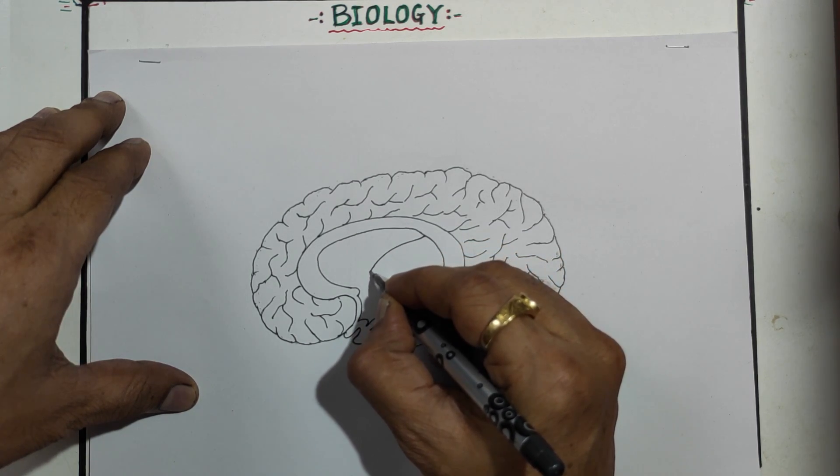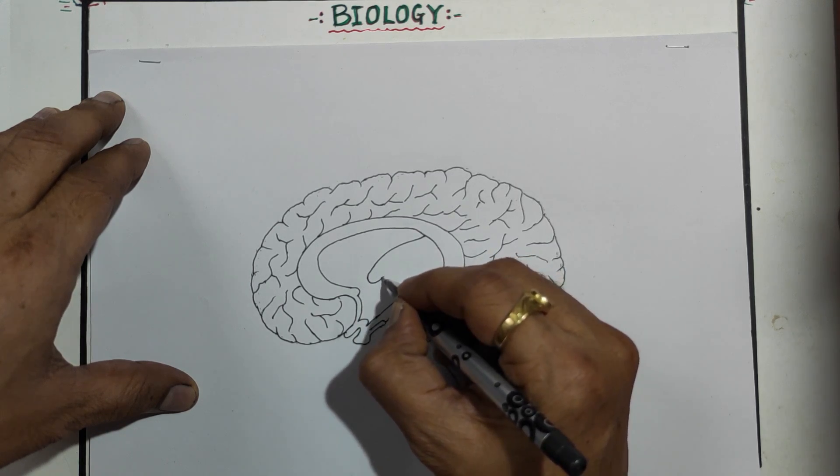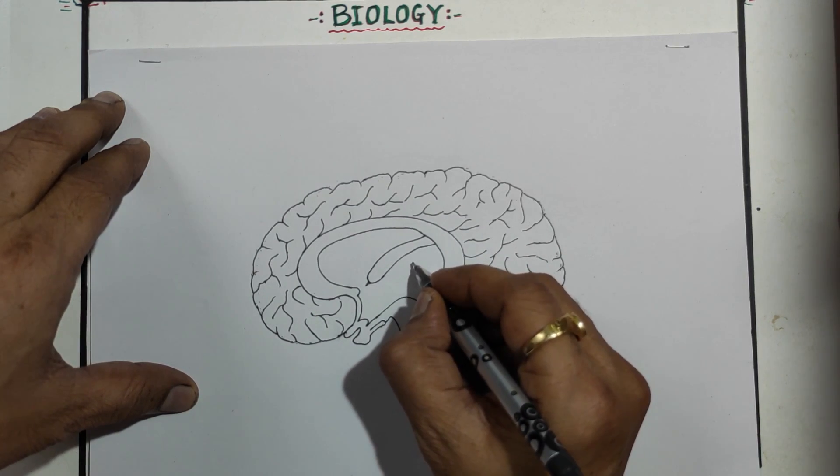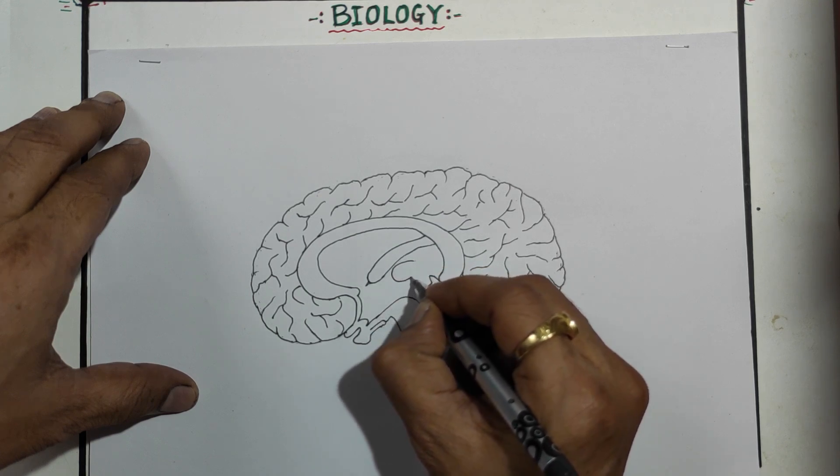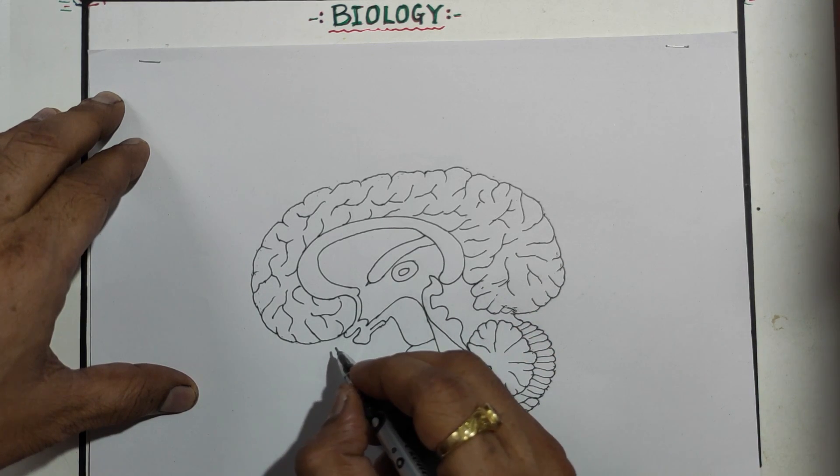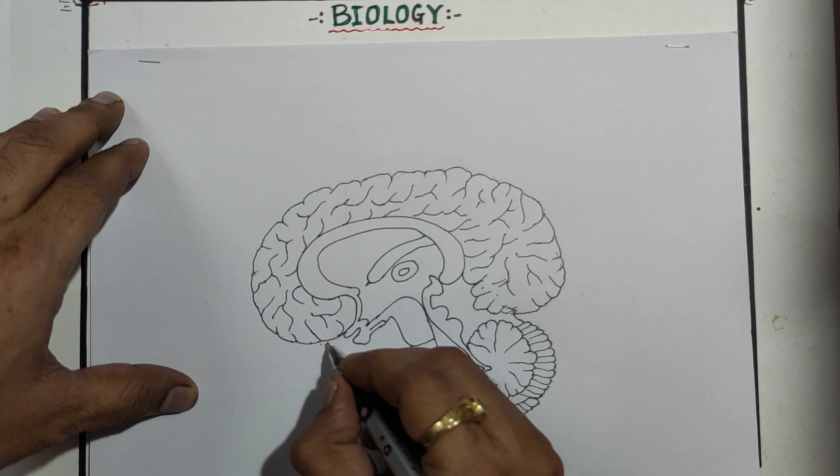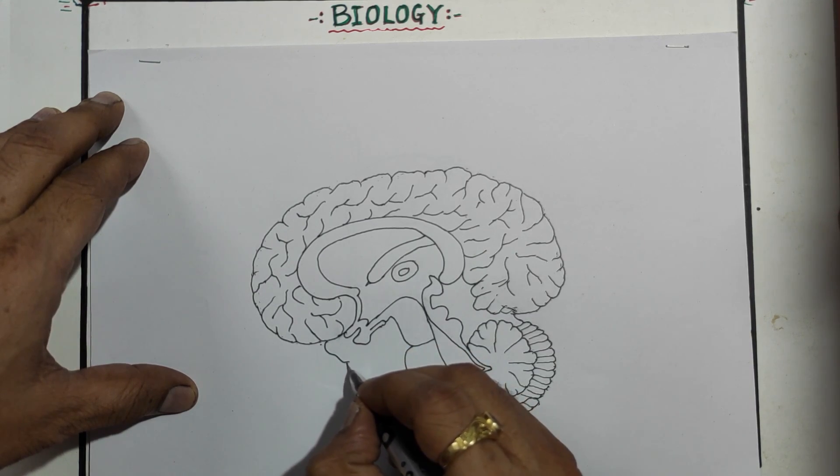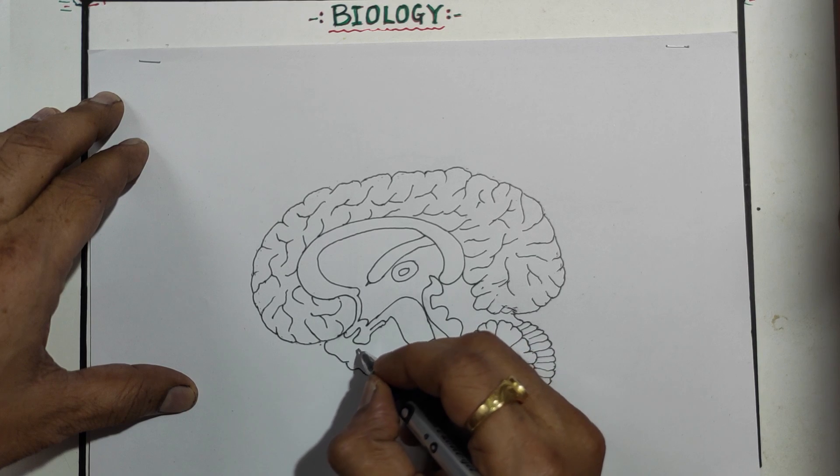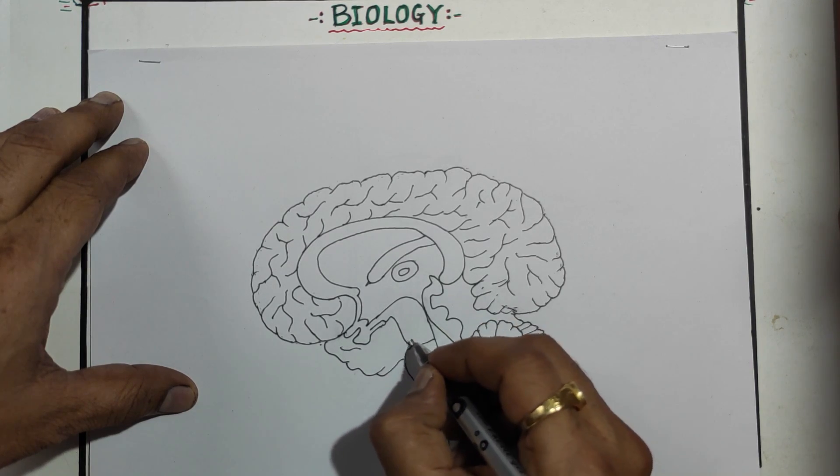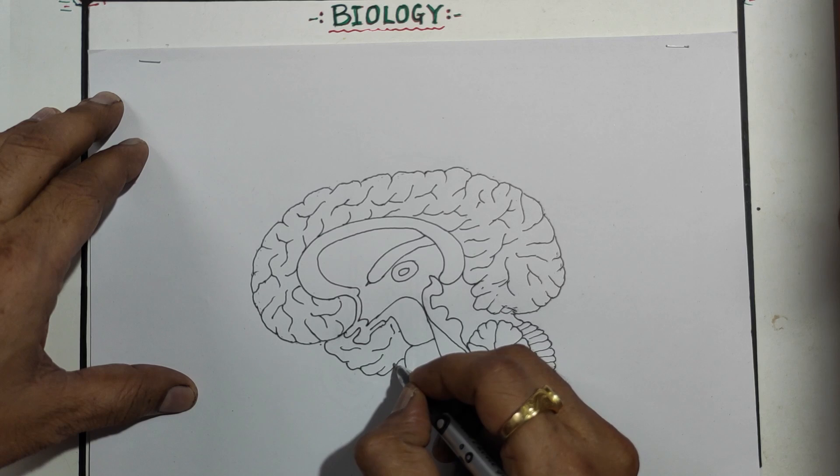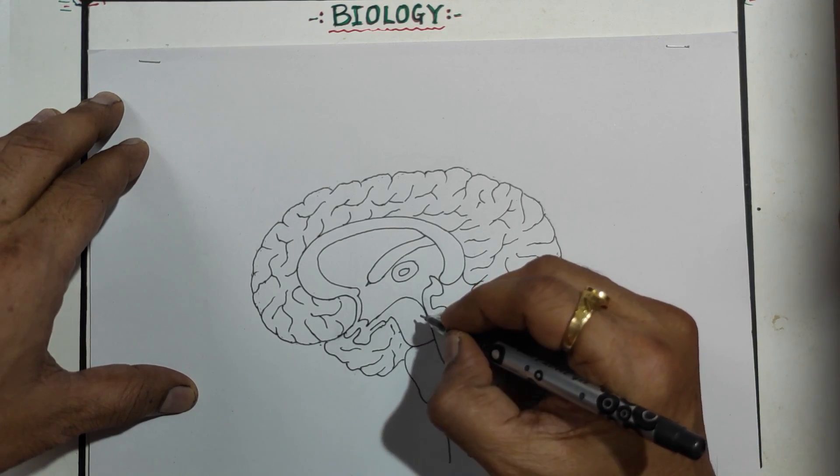So this you got the structure of the cerebrum. Now we will see the internal parts of this. Here draw somewhat like that structure. Make one pointed line like that, and at the center here the thalamus. Okay. Now we are below, you have to continue with the center like that lines.